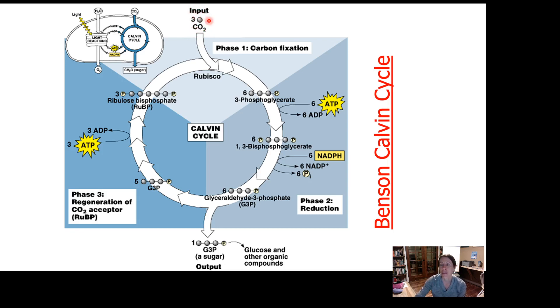We start off with three molecules of carbon dioxide. Each of those molecules of carbon dioxide has one carbon in it, so currently we have three carbons in three separate molecules: CO2, CO2, and CO2. We're going to feed these CO2 molecules into this chemical called rubisco.